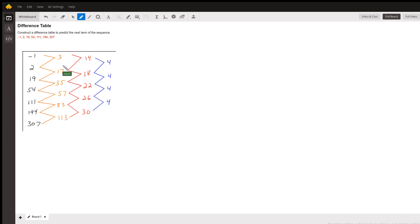And then what we do is we take the difference between consecutive terms. So for the first column that we have after our numbers, we have 2 minus negative 1 gives us 3.